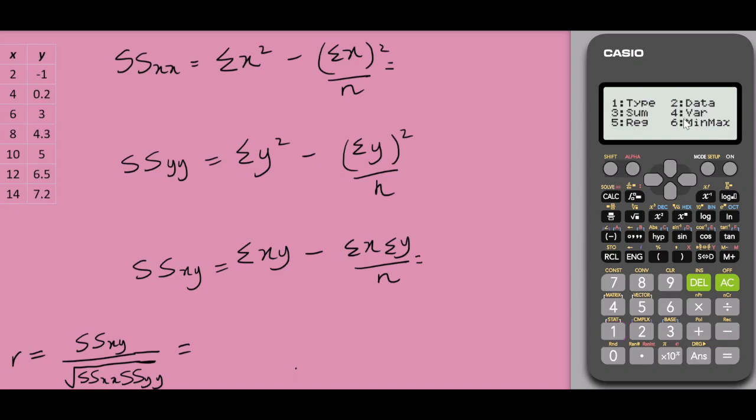Again shift 1, if I select 4, that gives me the value of my sample size, x bar, y bar. And again if I select shift 1 and select 5, I will get the value of a and b for my regression model and also the value of the correlation coefficient.